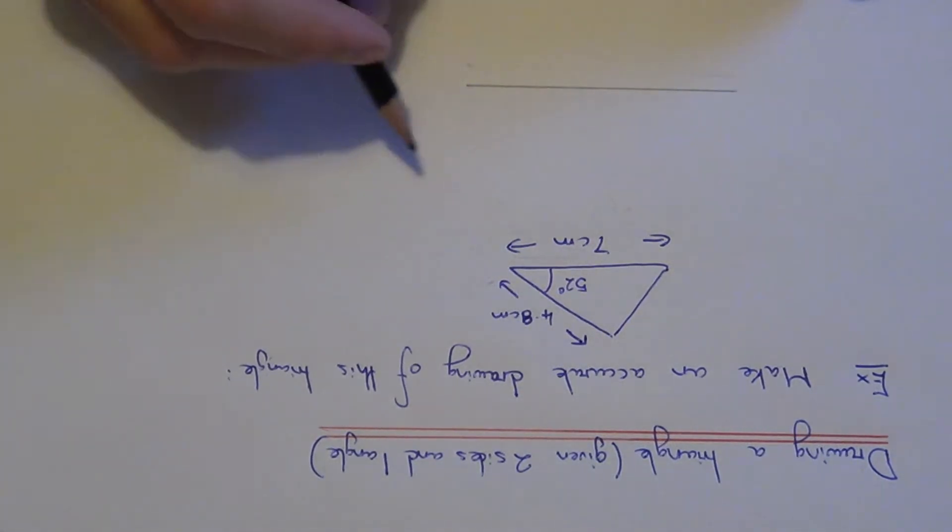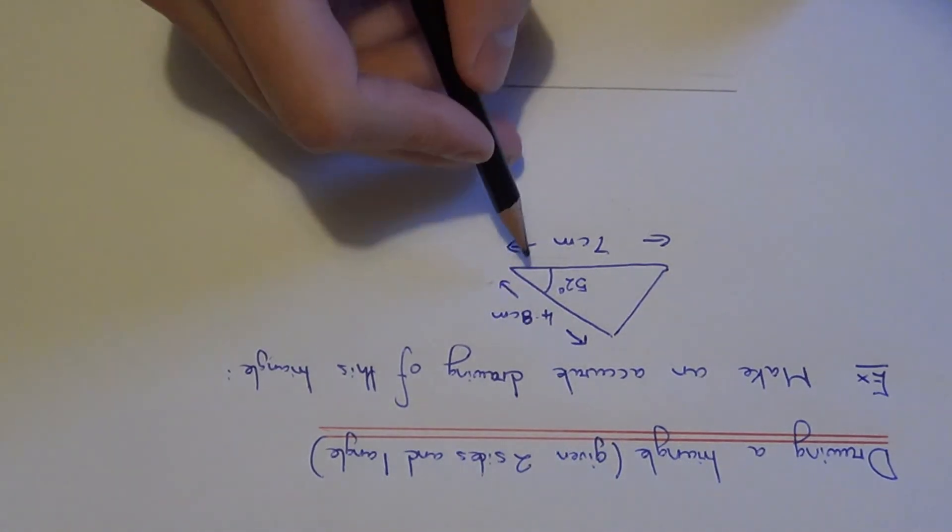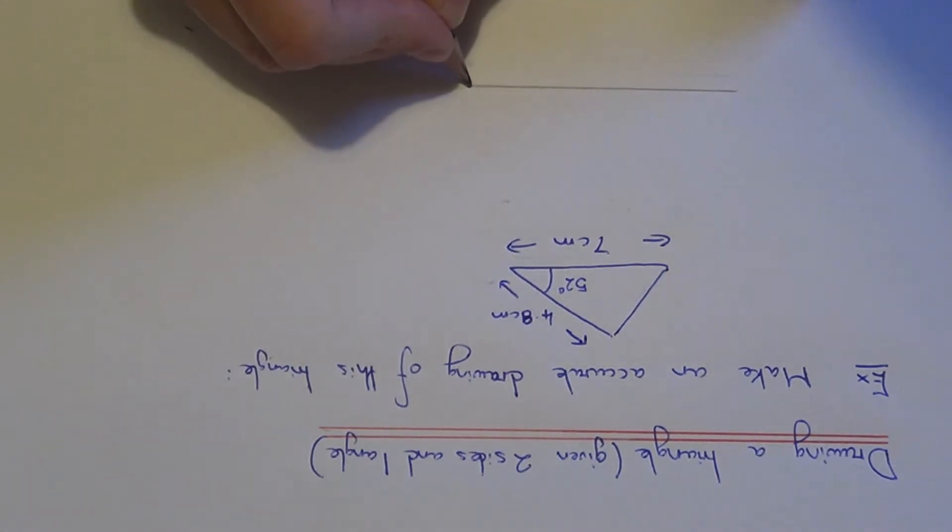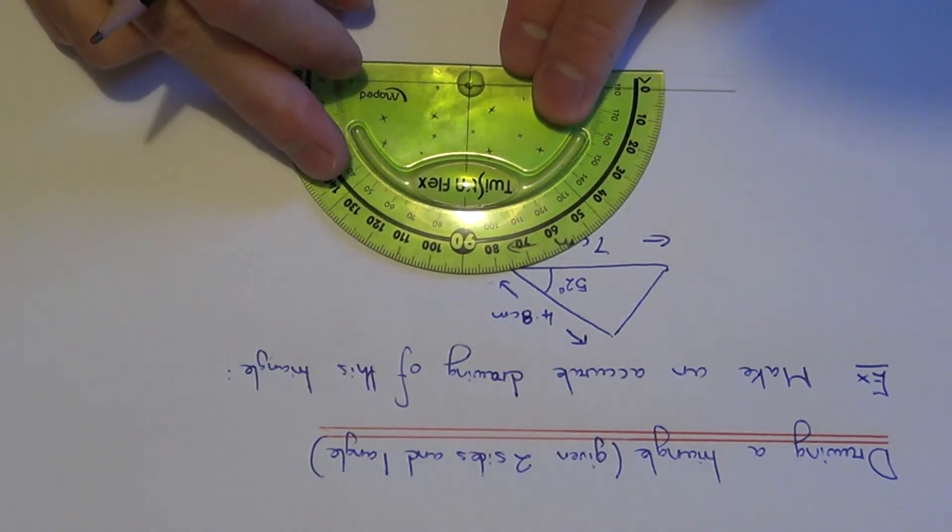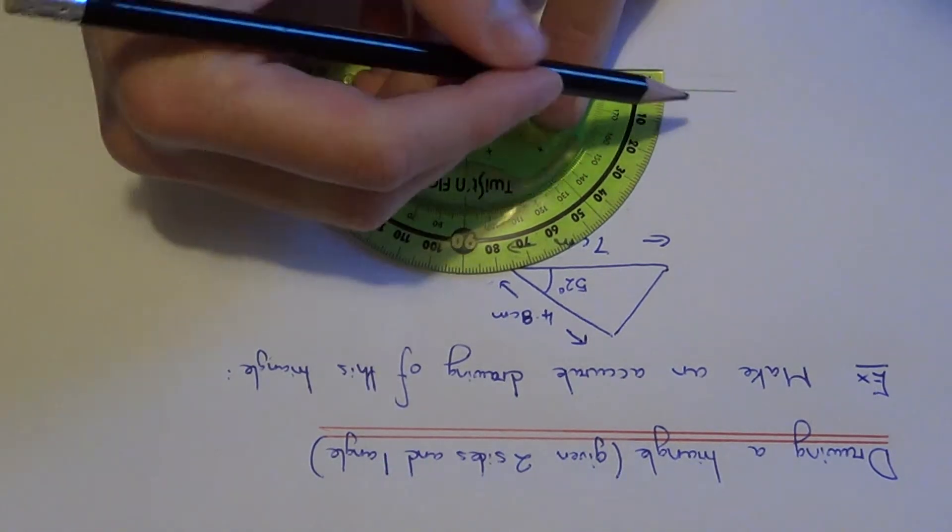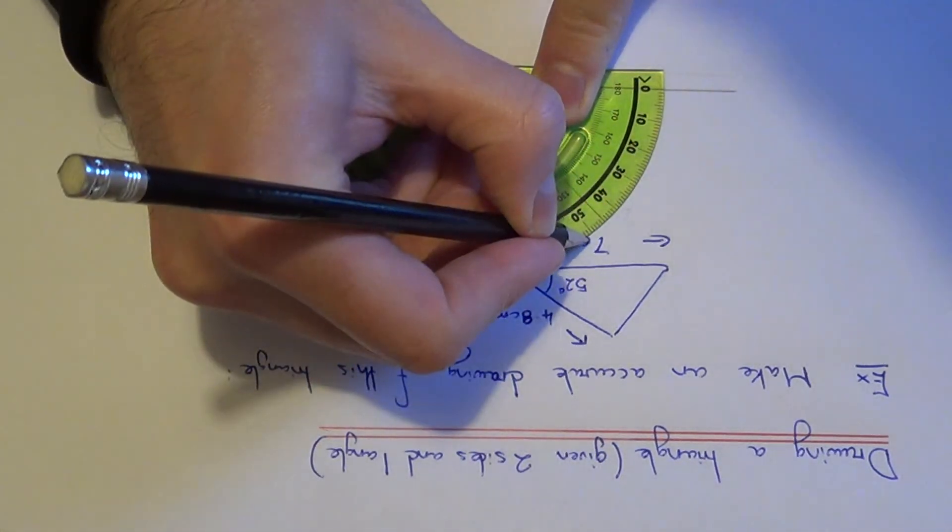The next thing you need to do is measure the angle. The angle is 52 degrees and it is on the right hand side of the line. So if you measure out 52 degrees, we have 0, 10, 20, 30, 40, 50, and 52 is about here.